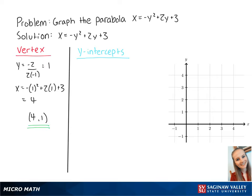Now we want to find the y-intercepts, which is when x is equal to 0. So we set up the equation negative y squared plus 2y plus 3 equals 0. If we multiply both sides by negative 1, we get y squared minus 2y minus 3 equals 0. Now we can factor out the left side to become y minus 3 times y plus 1 equals 0, which gets us y equals 3 or y equals negative 1.